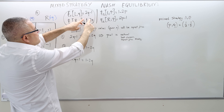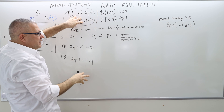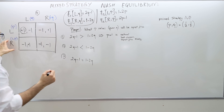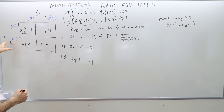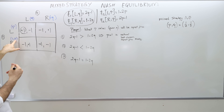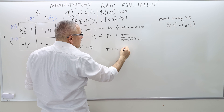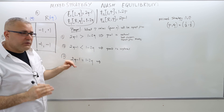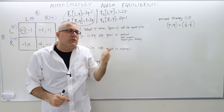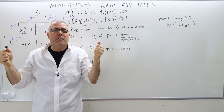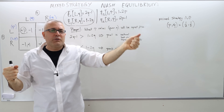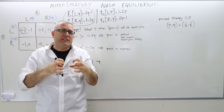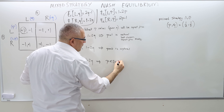In the second scenario, one minus two Q is greater than two Q minus one, meaning the expected payoff of playing right is higher than playing left. So you should put all your chips on the right arm and play right with probability one. Remember, one minus P is the probability of playing right, so you want that to be one, which means P must be zero. P equals zero is optimal — the best response.